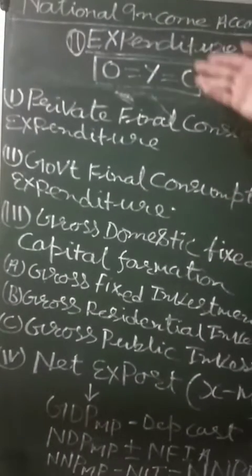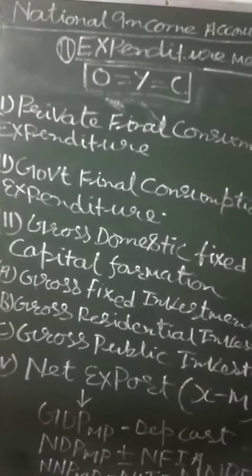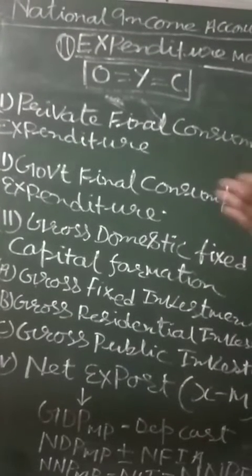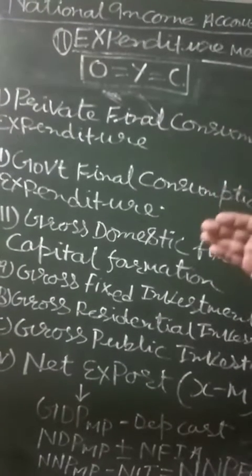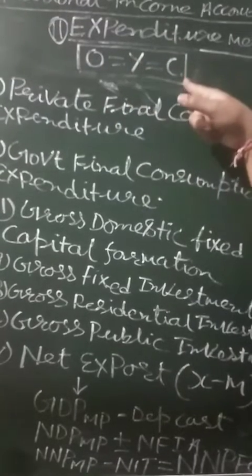Before we go ahead with the expenditure method, we need to be clear on a concept. The whole national income measurement depends upon O equal to Y equal to C, where O equals output, Y equals income, and C equals consumption.